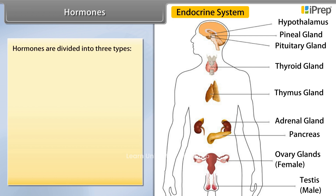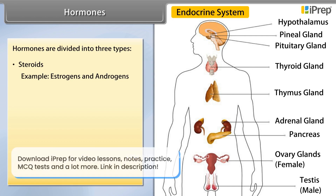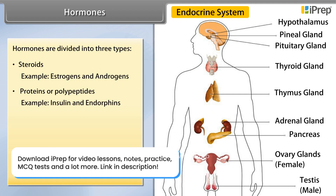Hormones are divided into three types: Steroids, e.g. estrogens and androgens. Proteins or polypeptides, e.g. insulin and endorphins. Amino acids, e.g. epinephrine and norepinephrine.